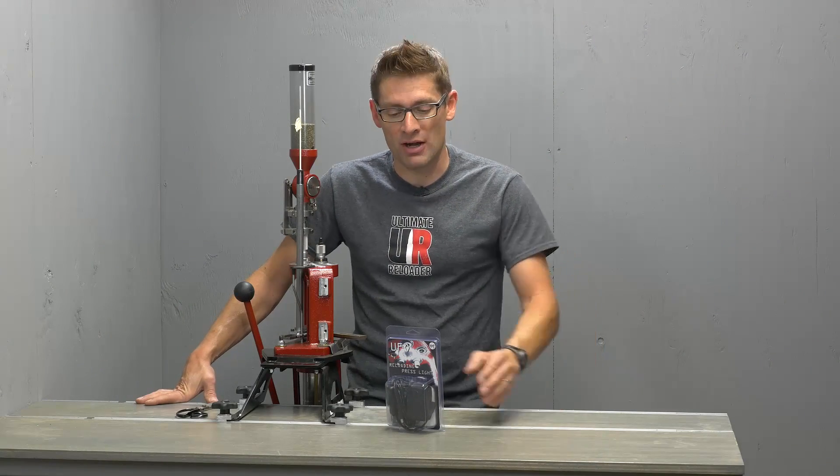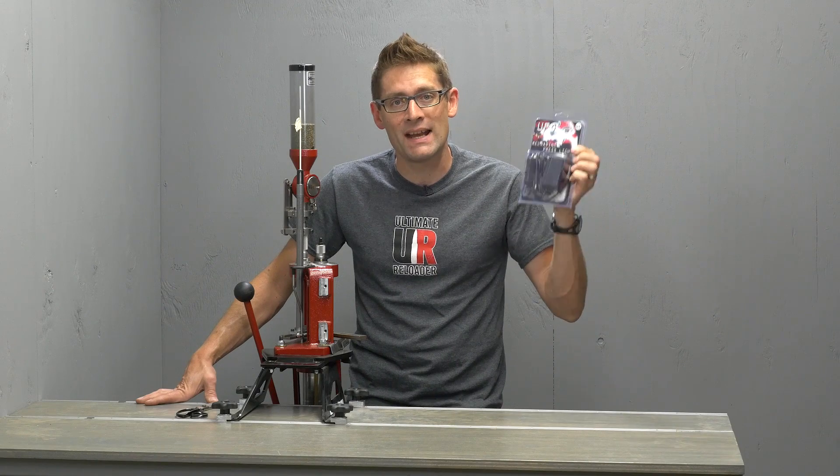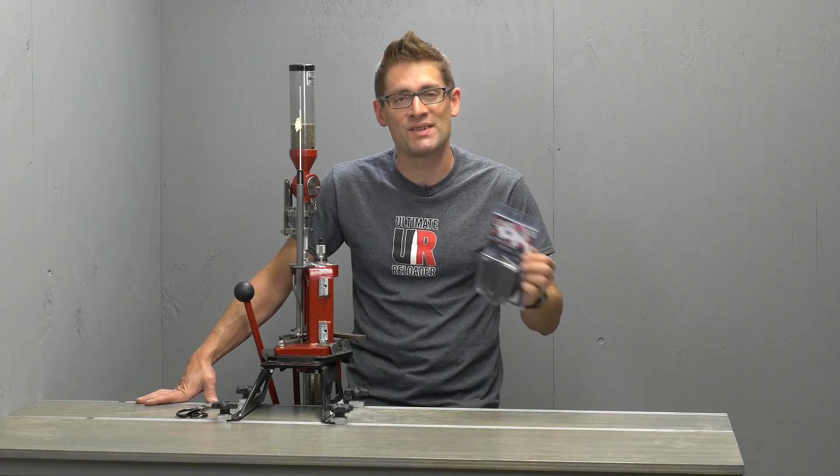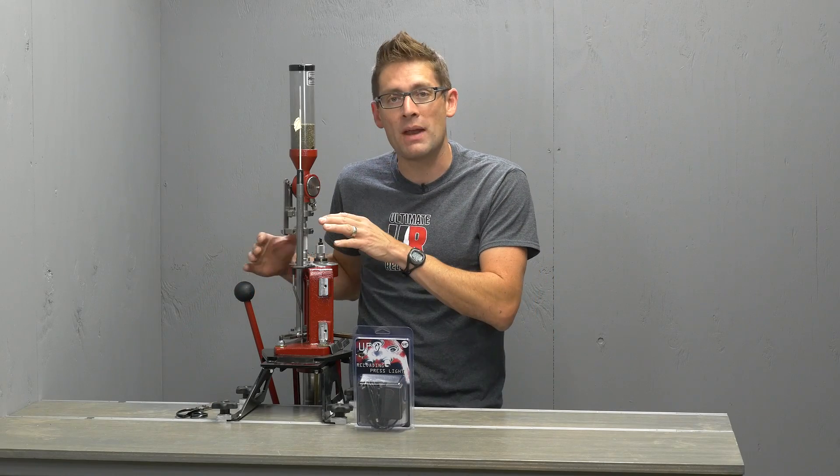In this video, I'm going to show you a product from KMS Squared. It's their UFO lighting system. They make lighting systems for a bunch of reloading presses. They make a universal lighting system. This one happens to be for the Hornady Lock and Load AP five station progressive press.